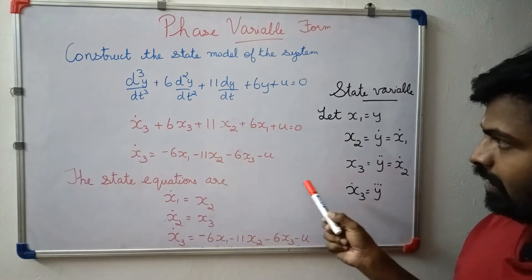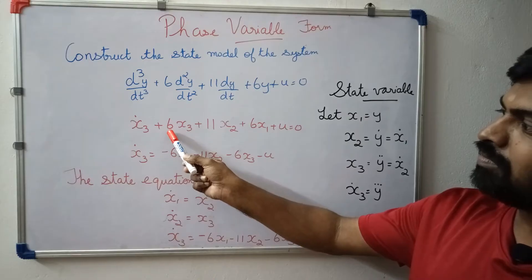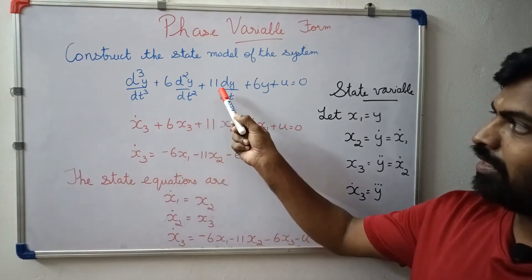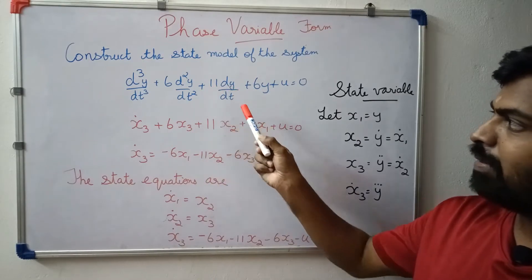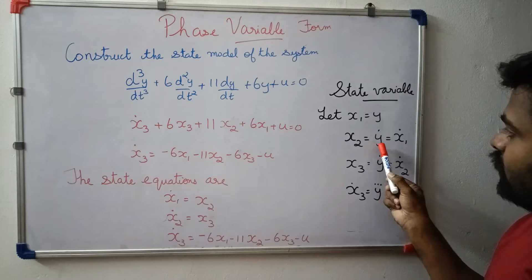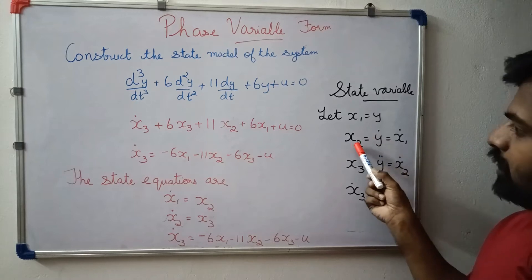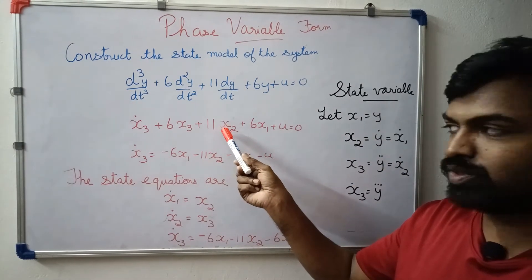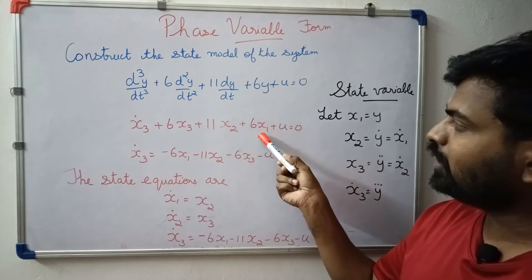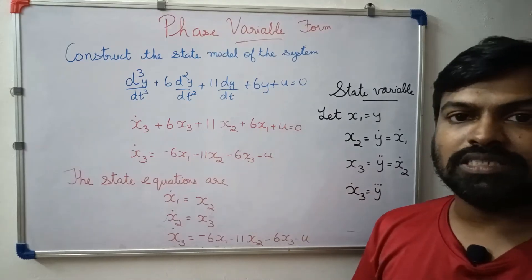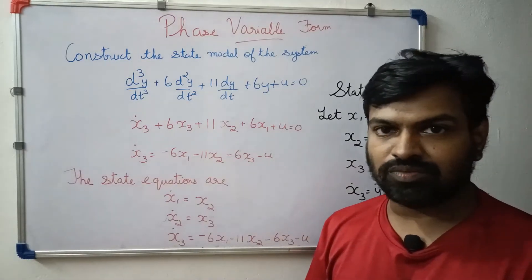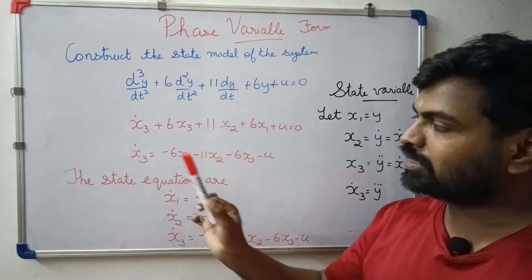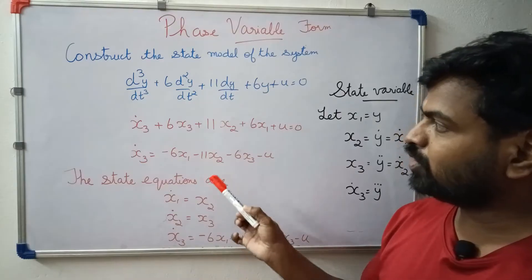x3 dot plus 6 times the cube term plus 11 times the square term — d²y/dt² is y double dot, which is x3 — and 11 times dy/dt is x2. Substituting: x3 dot equals minus 6x1 minus 11x2 minus 6x3, and u is equal to 0.